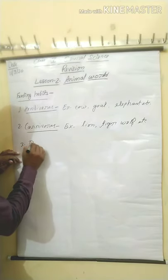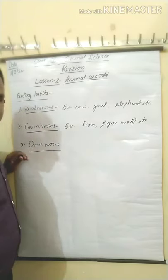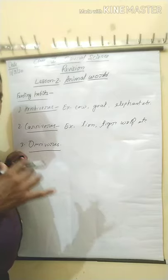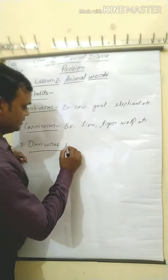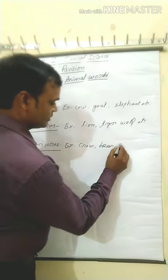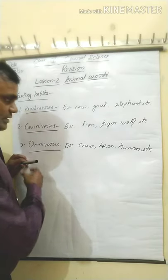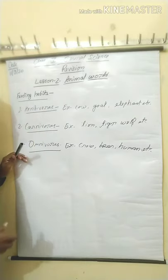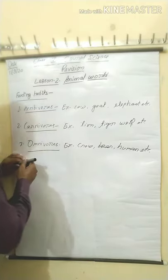Next, third: Omnivorous animals. What do you mean by omnivorous animals? Animals that eat both plant products as well as flesh of other animals are called omnivorous animals. Examples: crow, bear, human, etc. Their teeth as well as other body parts are modified as omnivorous animals. They can eat both plant products as well as flesh of other animals.